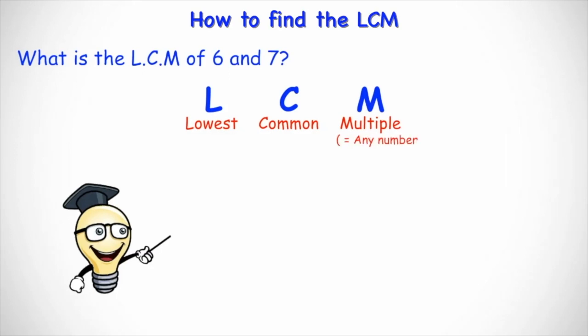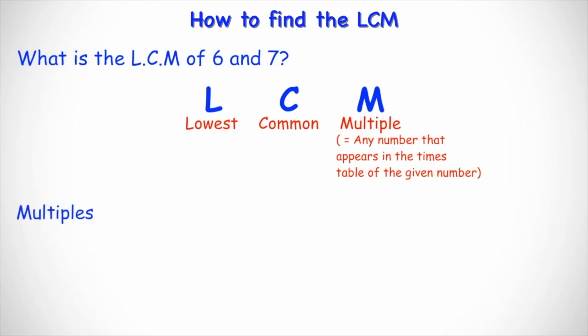Multiple means any number that appears in the times table of the given number. So for instance, we're given the numbers in the question as six and seven. The multiples of six are all the numbers that appear in the times table for six. So the multiples of six are 6, 12, 18, 24, 30, 36 and so on.